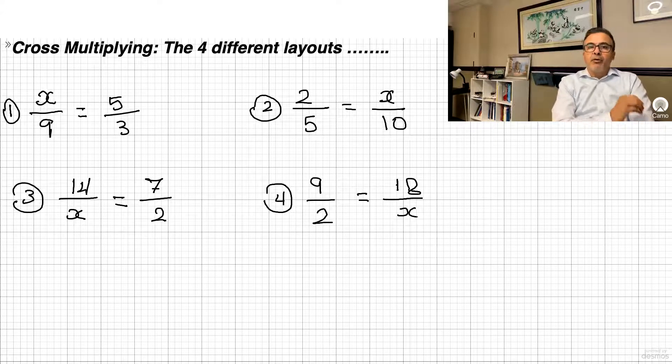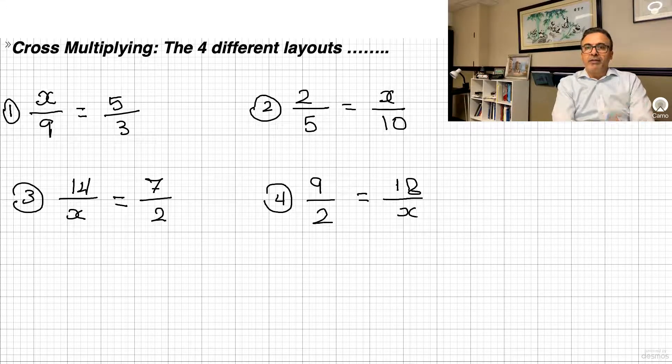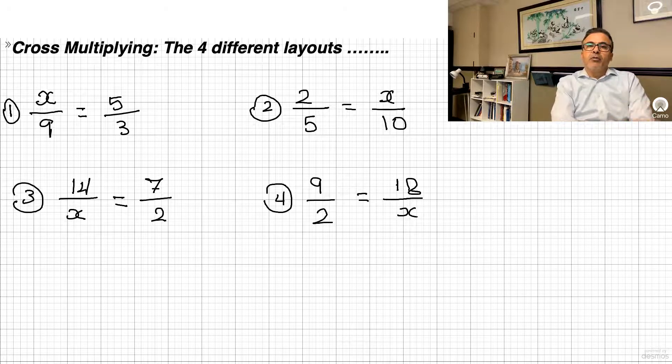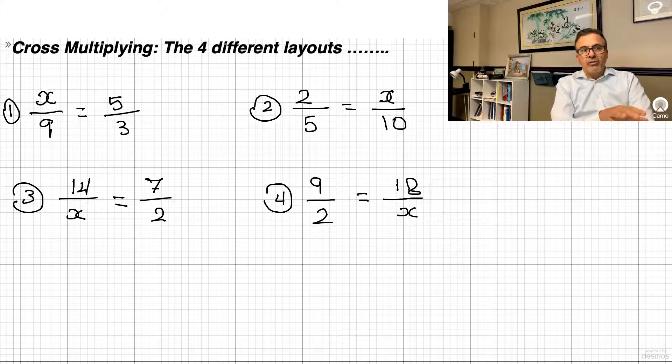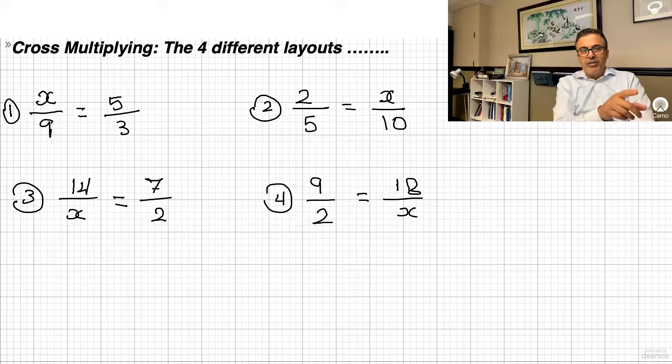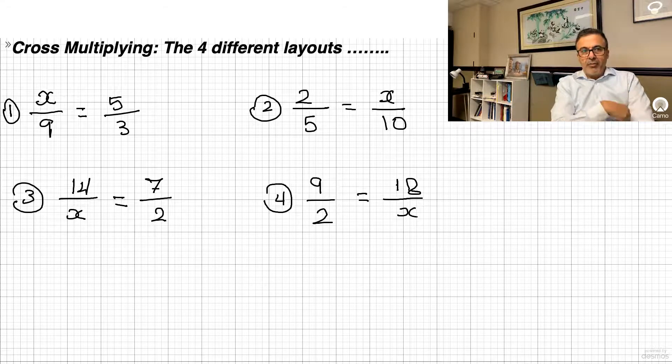Cross-multiplying doesn't only help you in math, it will help you in physics and chemistry as well. Whenever you want to isolate the variable, cross-multiplying is the way to go. There are four different layouts for cross-multiplying, and I'm going to show you those in the first four examples that I have on the board there.